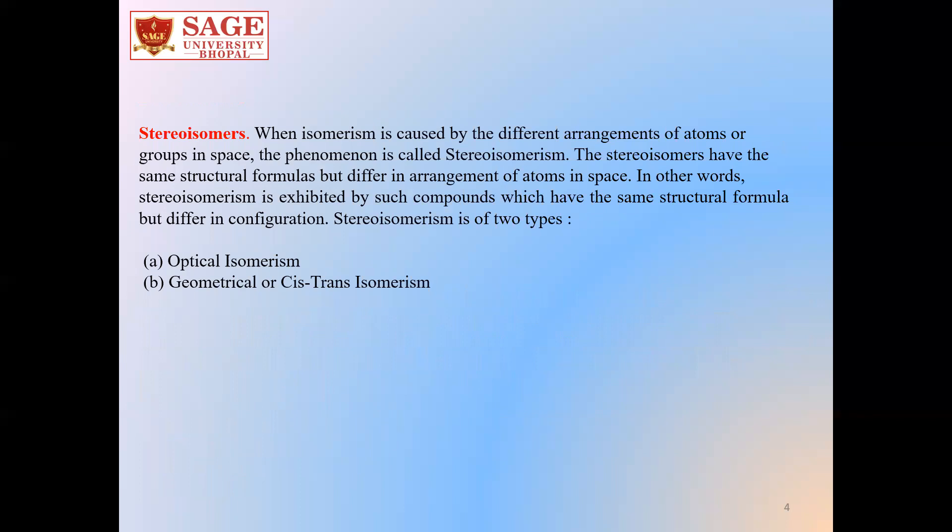The second type of isomerism is stereoisomerism. When isomerism is caused by the different arrangements of atoms or groups in space, the phenomenon is called stereoisomerism. Stereoisomers have the same structural formulas but they differ in the arrangements of atoms in space. In other words, stereoisomerism is exhibited by compounds which have the same structural formula but differ in configuration. Stereoisomerism is mainly of two types: optical isomerism and geometrical or cis-trans isomerism.